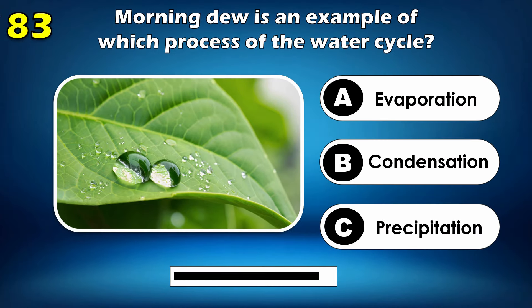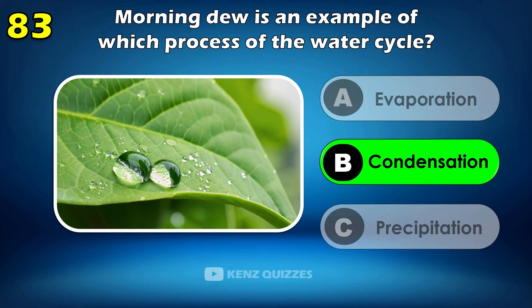Morning dew is an example of which process of the water cycle? Condensation.